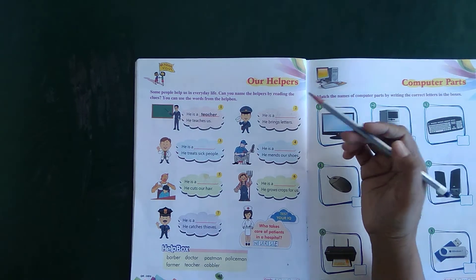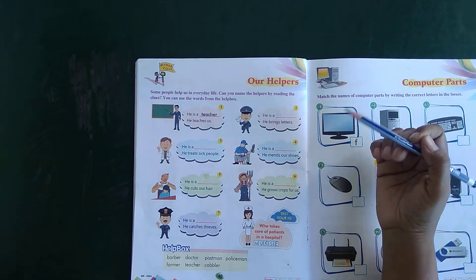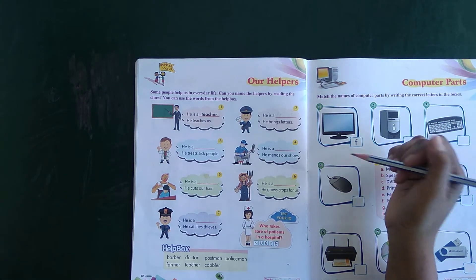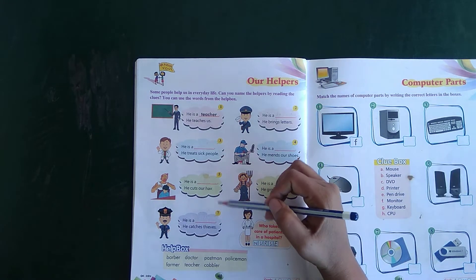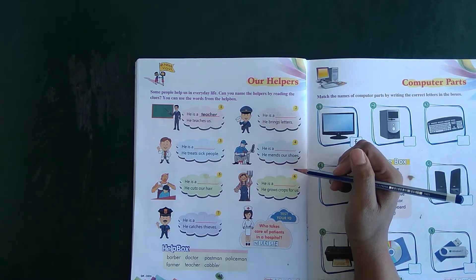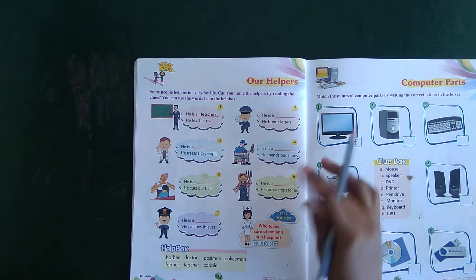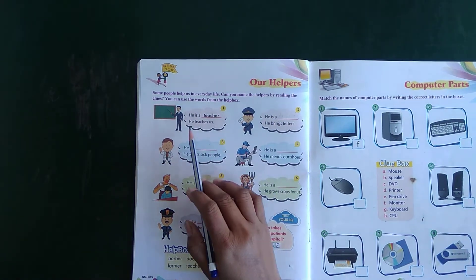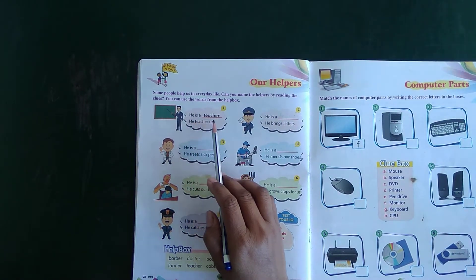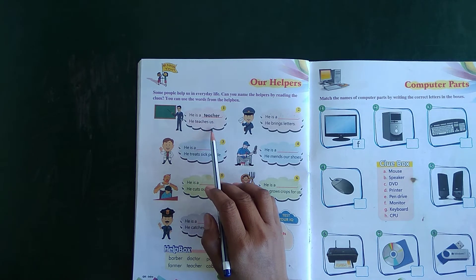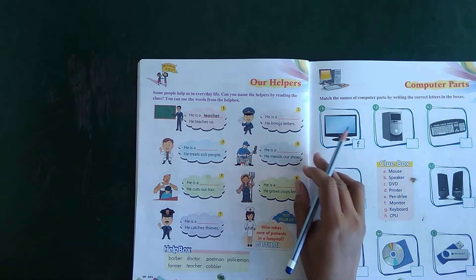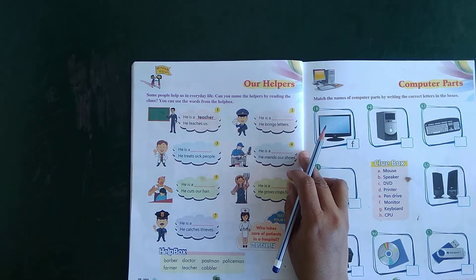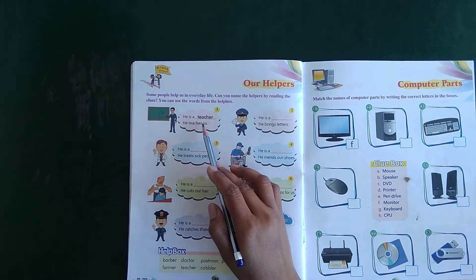Kuch log hamaari daily life mein hamaari help karte hain. Hamaari liye woh kaam karte hain. Humein kuch clues diye gaye hain. Aap is clue se point out karo ki yeh kaun hai. First: He is a teacher. He teaches us. Yeh hamaari padhate hain. Yeh kaun hai? Teacher. Kaun aapko padhata hai? Teacher padhata hai.